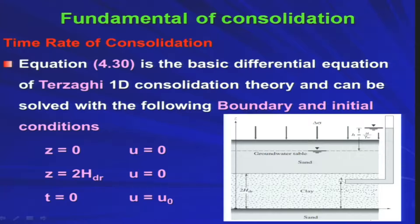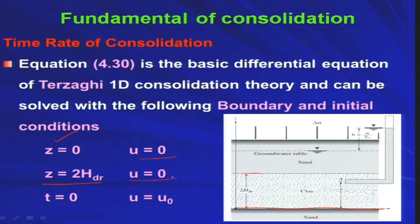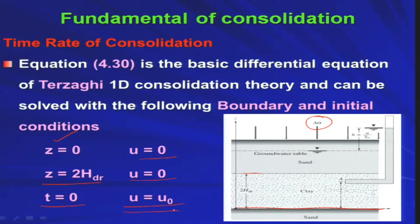The boundary and initial conditions are: (1) at Z = 0, U = 0, because this is the interface between the clay and sand layer where water drains freely; (2) at Z = 2H_dr, U = 0, for the same reason at the other boundary; and (3) at t = 0, U = U₀, meaning that upon applying the total stress increment delta sigma, the excess pore water pressure immediately builds up to U₀.